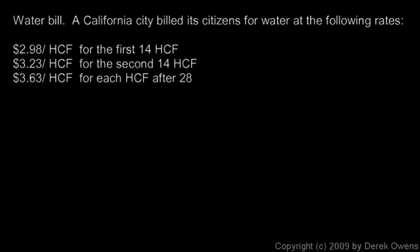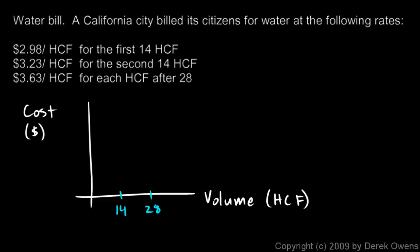If we were to graph this, this would be defined in three pieces. We won't write out the definition, although we could, but let's just graph the cost here in dollars versus the volume of water used. The volume would be in hundreds of cubic feet, and the critical points here are 1,400 cubic feet and 2,800 cubic feet. Obviously a cost of zero if you use zero water. So you have an increasing cost for water usage up to 1,400 cubic feet, then increasing at a higher rate up to 2,800 cubic feet, and then an even higher rate beyond that. Your graph would look something like this, defined in three pieces.